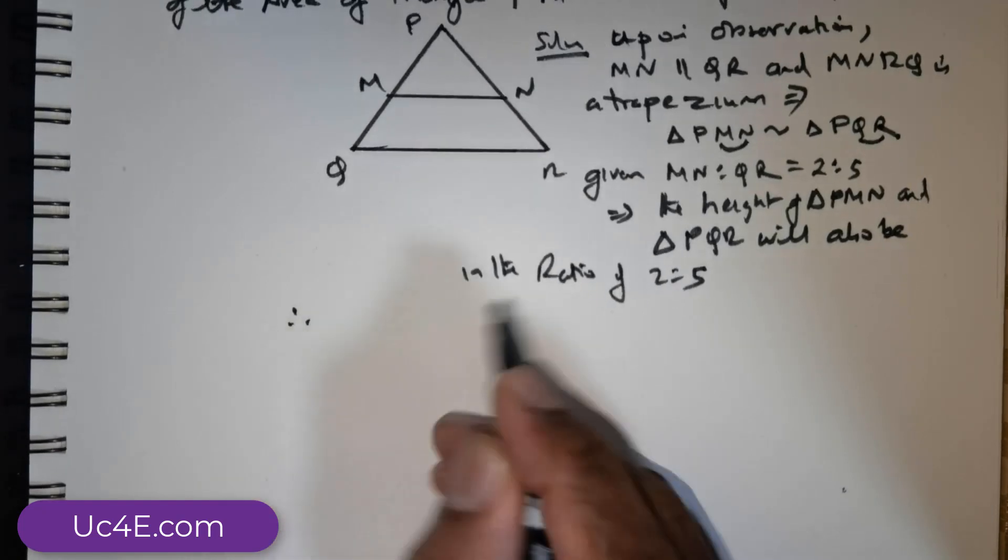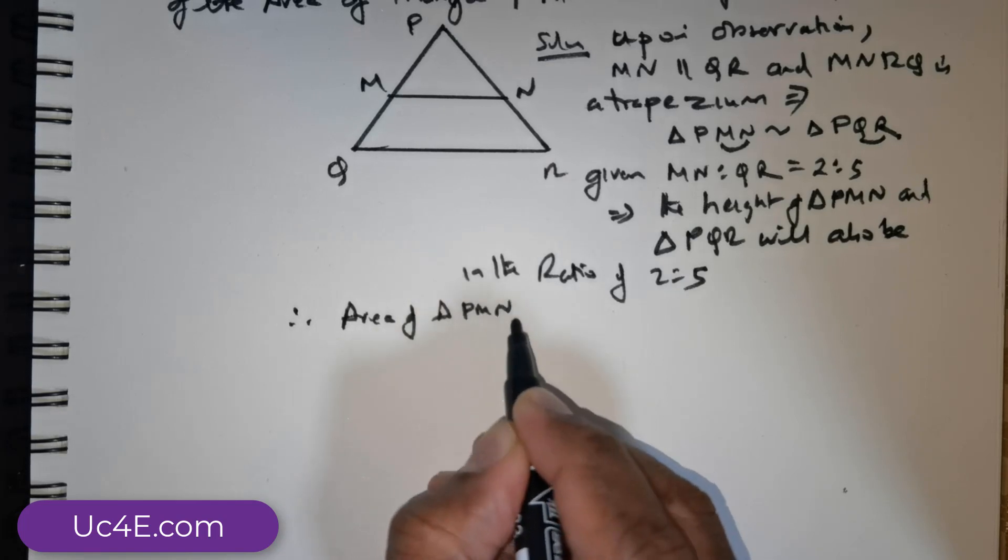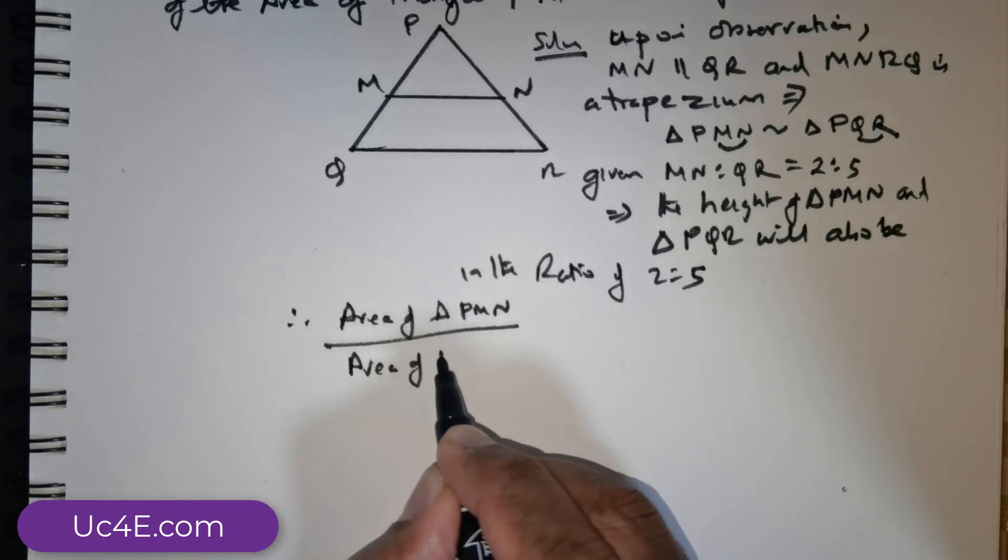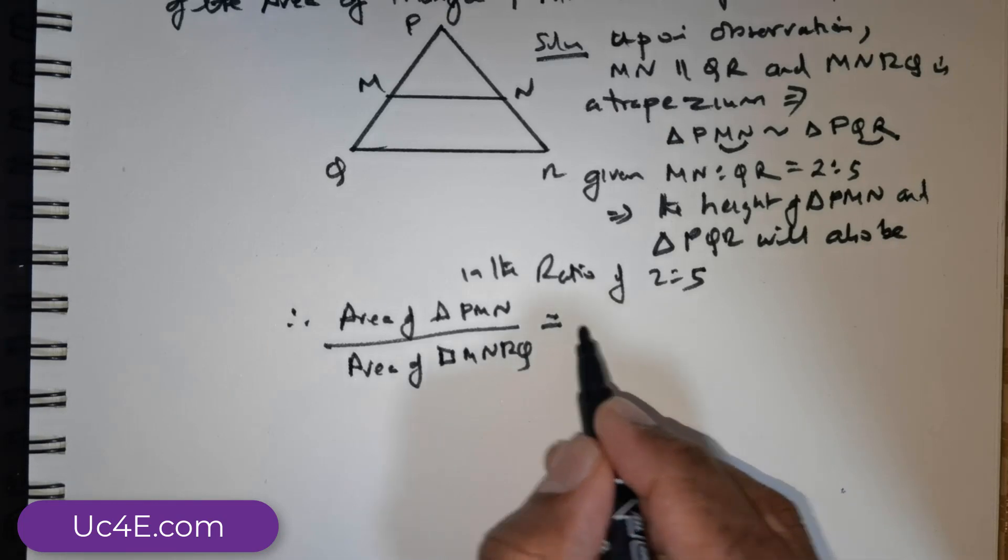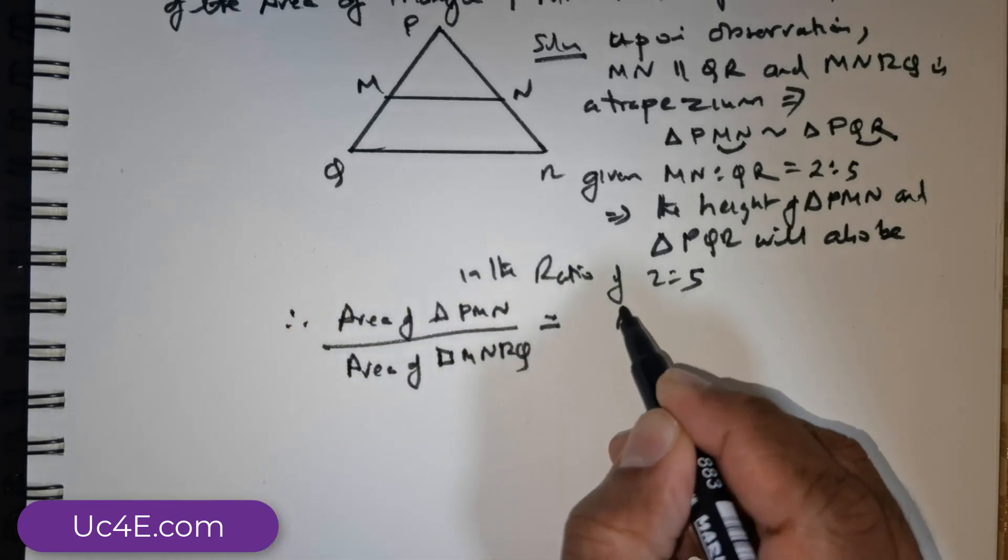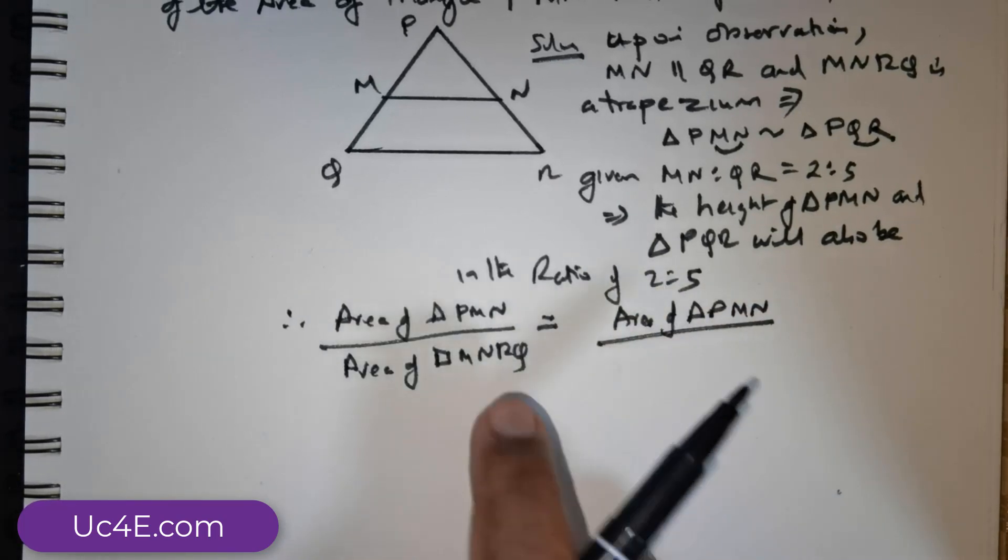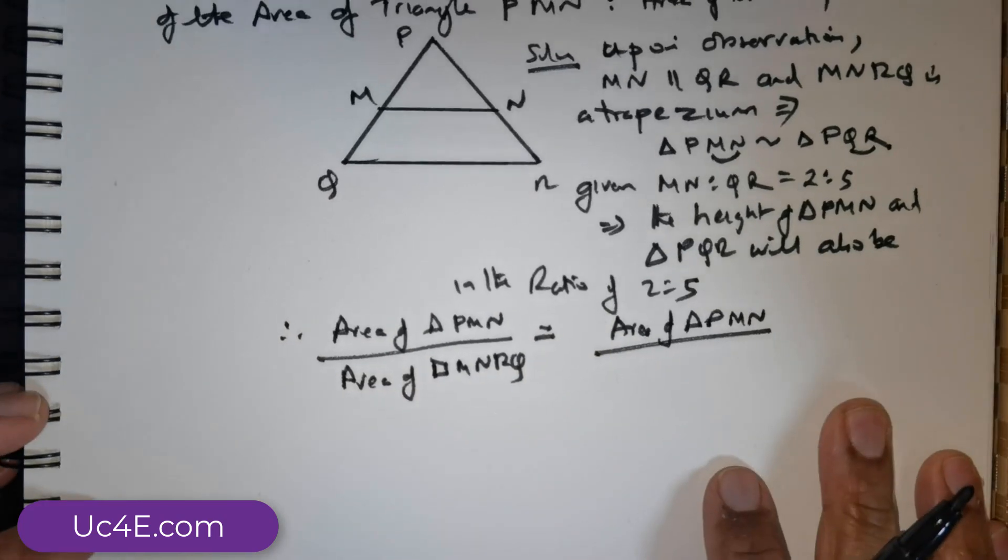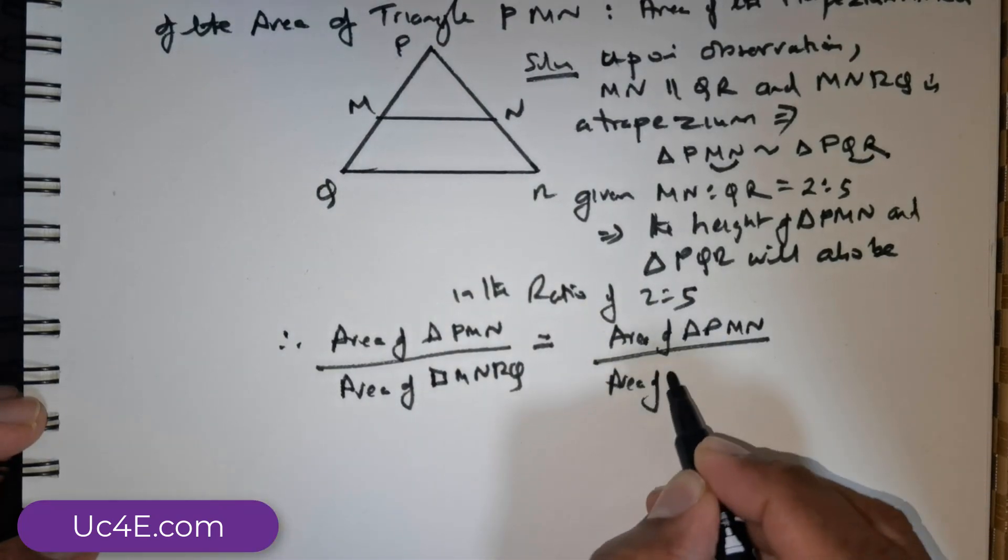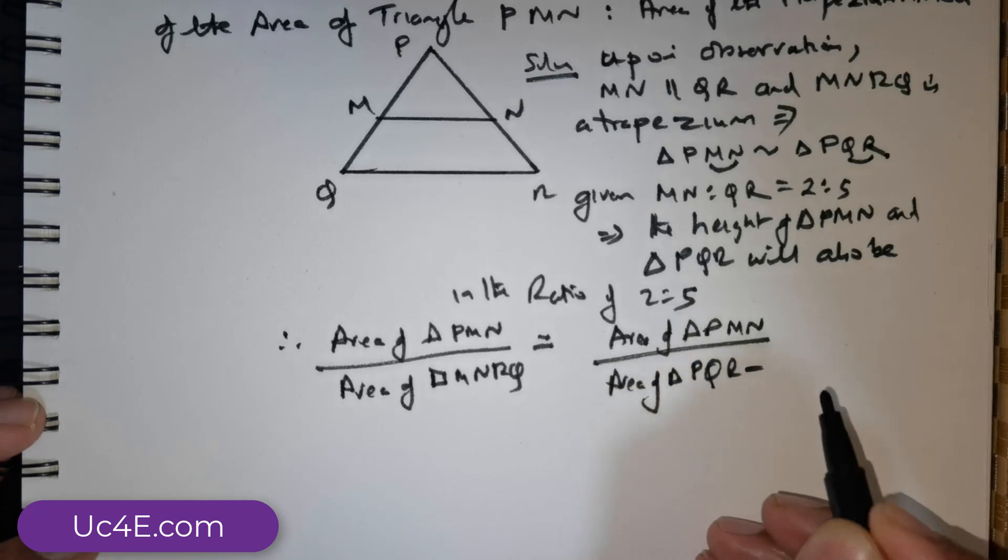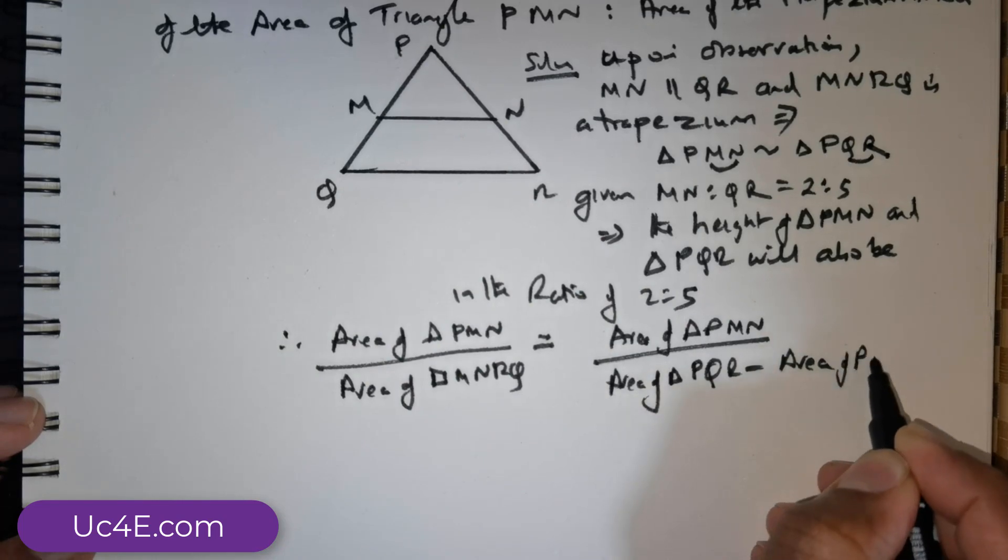So therefore, we are expected to find the area, the ratio of the area of triangle PMN to the area of the trapezium MNRQ is equal to area of the triangle PMN. Now area of MNRQ, what is that? That's nothing but if I were to consider the entire area, area of triangle PQR. From PQR, I am taking away the top portion. So minus area of PMN.